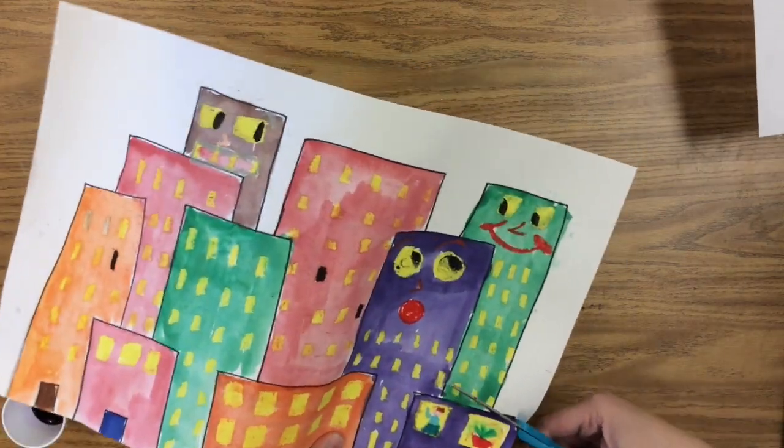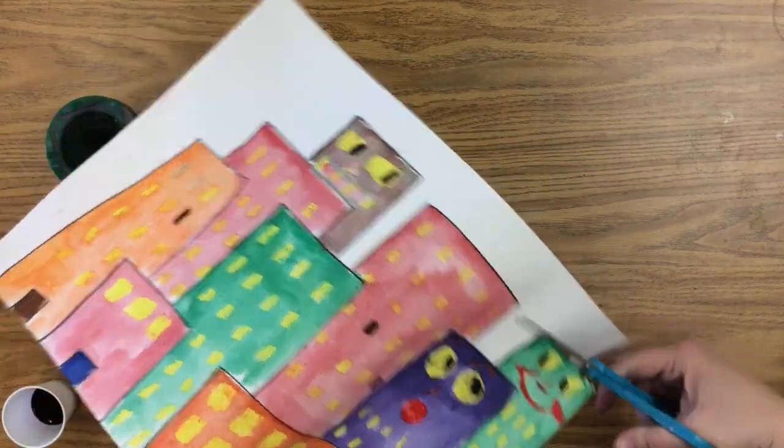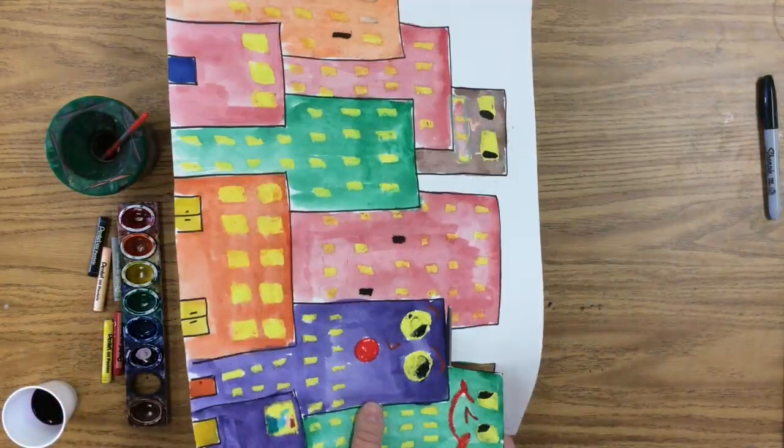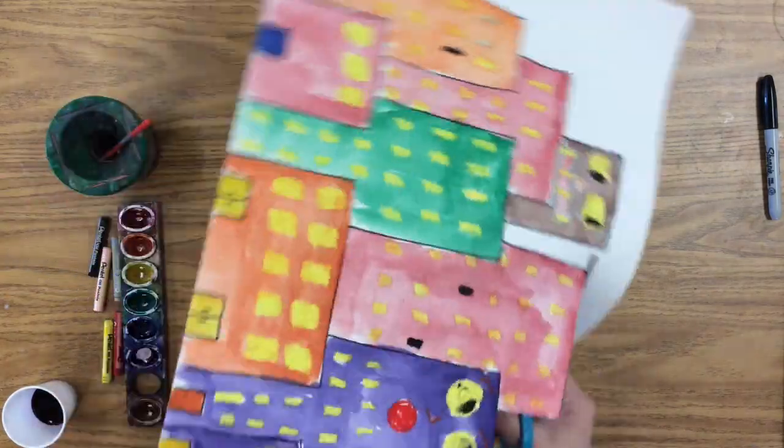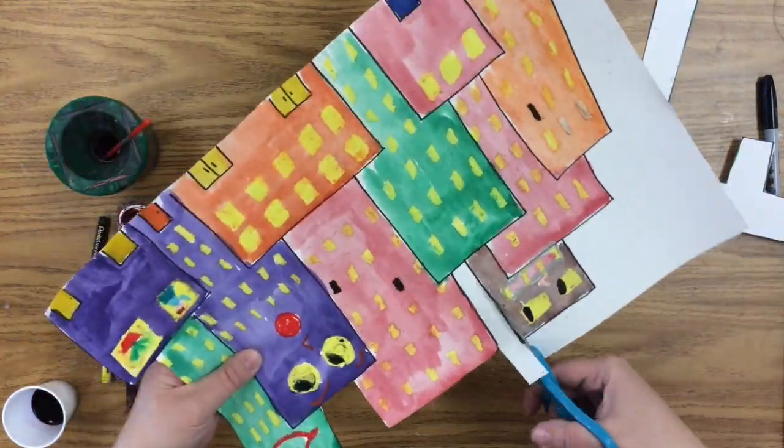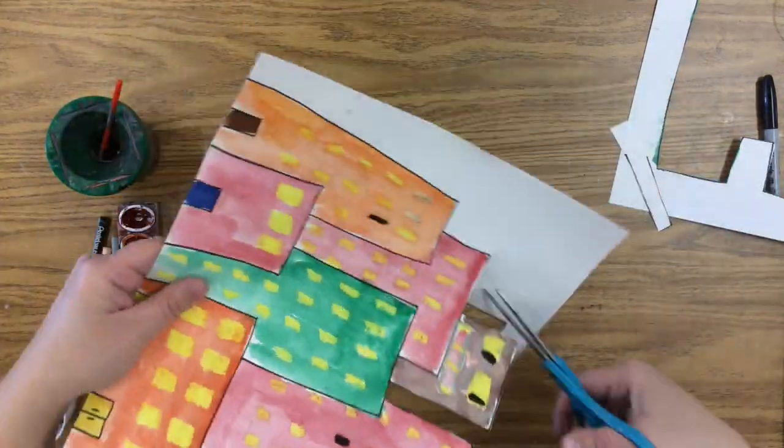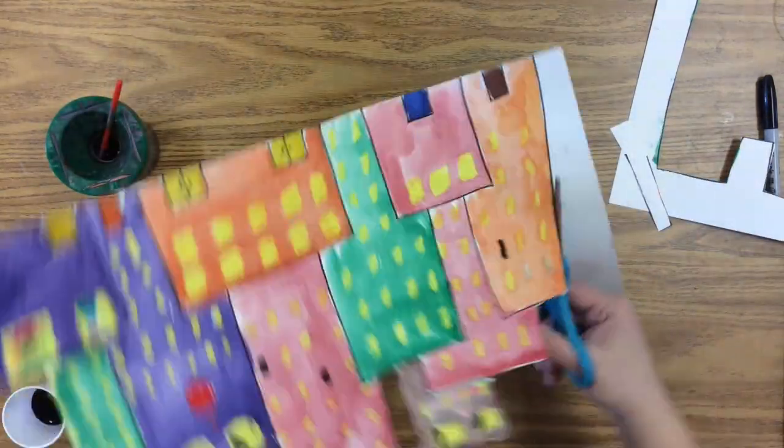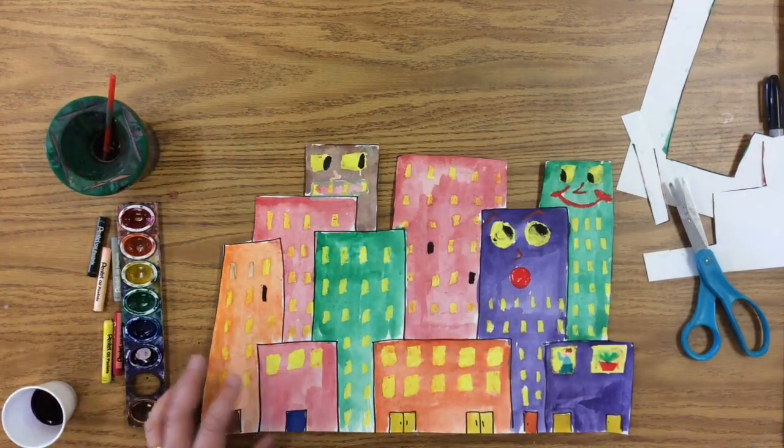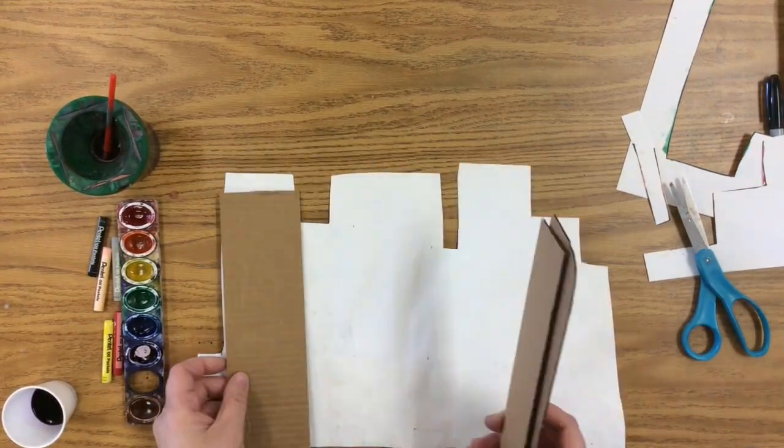All right, the next step, this is after everything has dried. Now that our paints have all dried, we're going to cut out the city and we're just going to cut off all of the white and keep our city as one whole piece here, one large whole shape, just by cutting off the white.